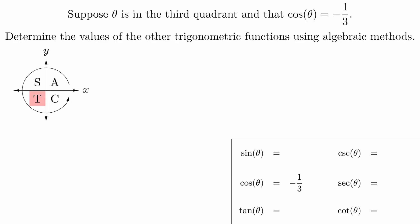Knowing that the angle is in the third quadrant, we already know the signs of all the functions. Only tangent and cotangent will be positive. We now need to use our algebraic methods to get their values.